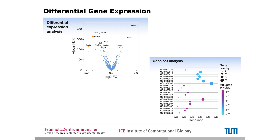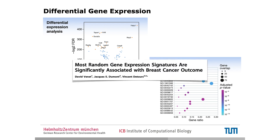There's a paper I'd like to draw your attention to. Its title already tells us what it's about: 'Most random gene expression signatures are significantly associated with breast cancer outcome.' This means that if you take a random gene set and paste it into Metascape or your favorite gene set enrichment analysis tool, it will most certainly return something significant — but that doesn't mean it's meaningful. It can almost always be associated with breast cancer outcome or anything else.